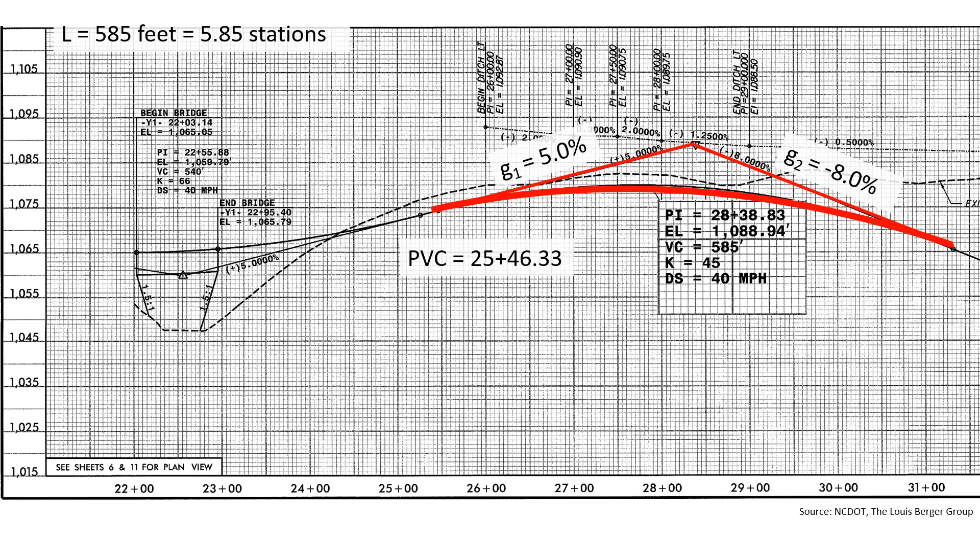We can determine the PVC station, which is 25 plus 46.33, which is half the length of the curve before the PVI.